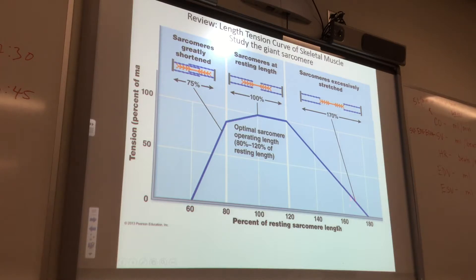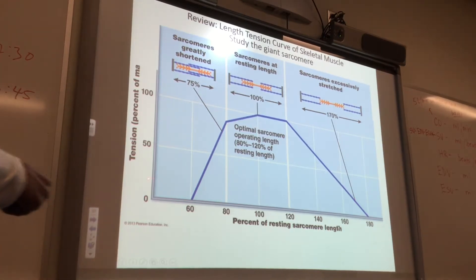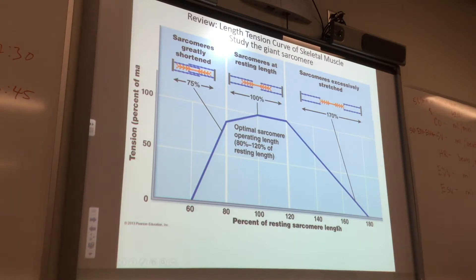If your sarcomeres are excessively stretched, you get less than 25% of what you could actually generate. This is how it looks for skeletal muscle. But cardiac muscle has sarcomeres too.